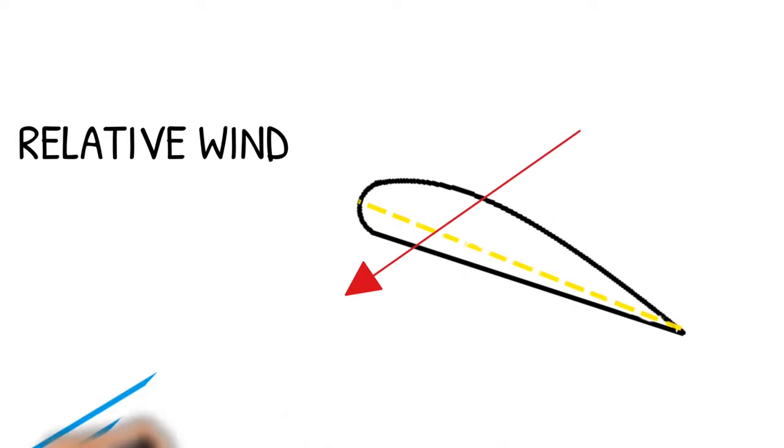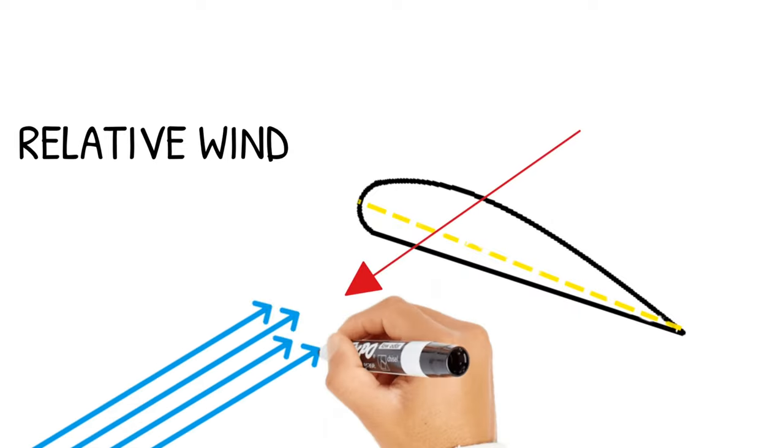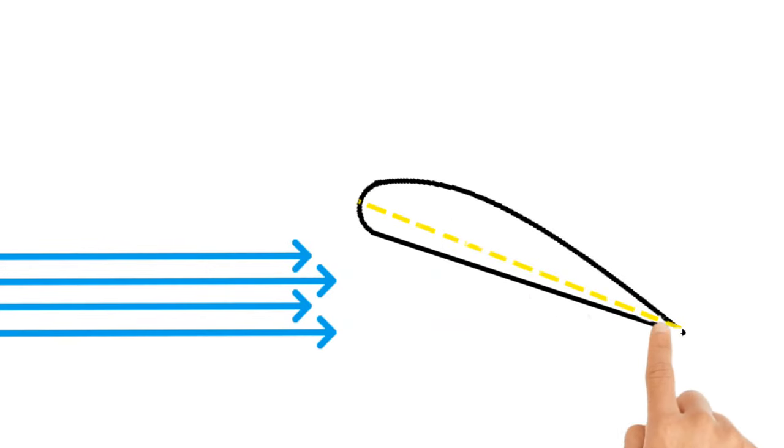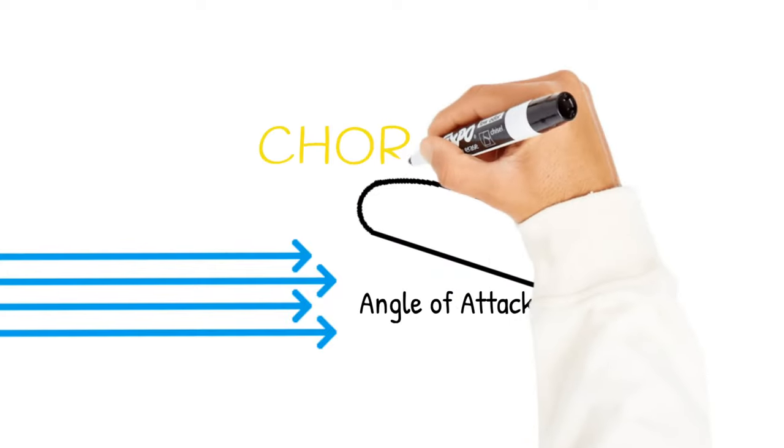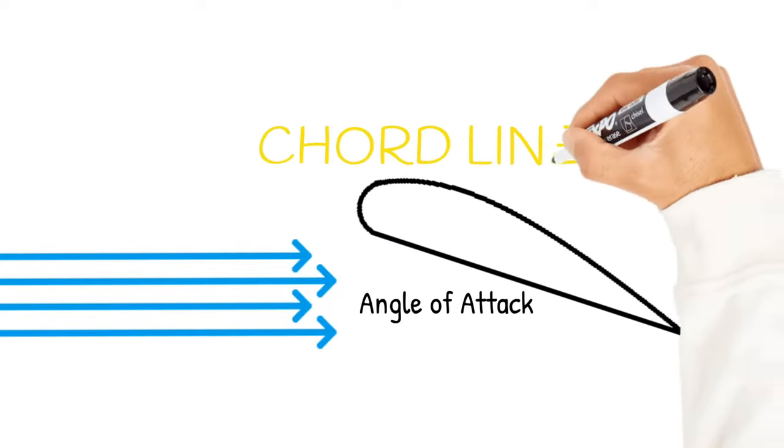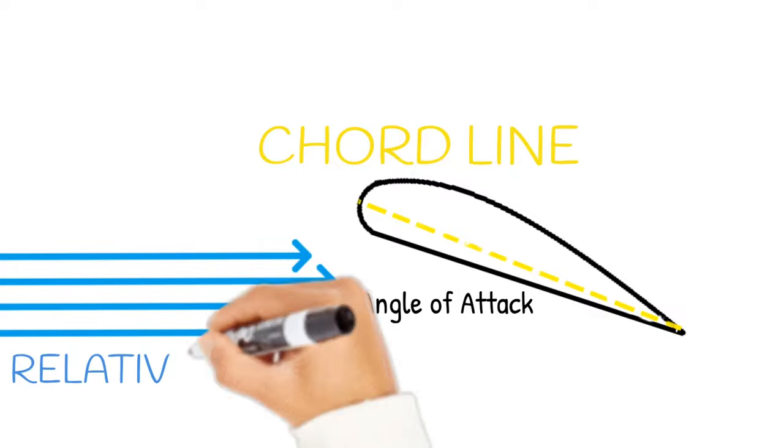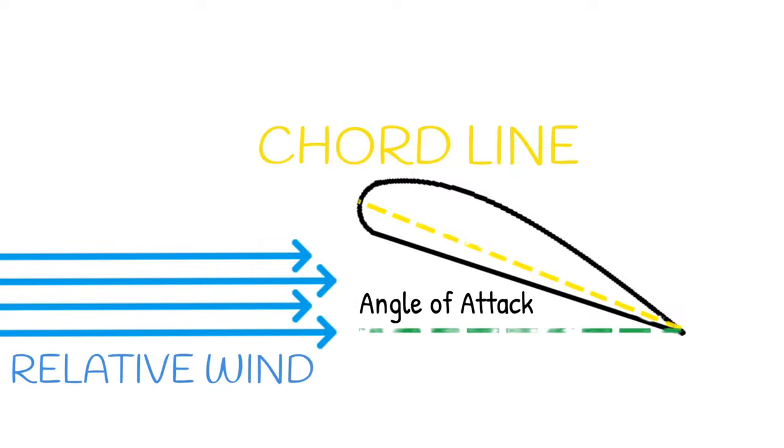When an aircraft changes its direction of travel, relative wind also changes. So relative wind acts on the airfoil at different angles. This angle is known as the angle of attack. The most important thing to keep in mind here is that the angle between the cord line and the relative wind is the angle of attack.